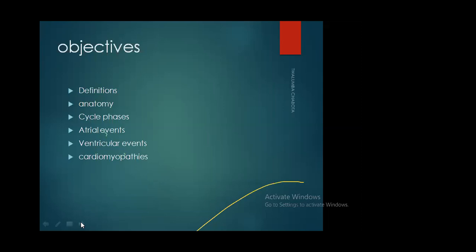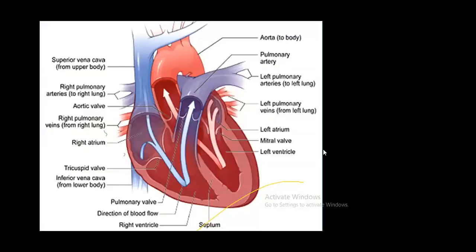In terms of definition, we can define the cardiac cycle as having one systole and one diastole. Systole entails contraction of the heart, and diastole means relaxation. Therefore, one complete cycle consists of one complete contraction and one complete relaxation. The heart has two functions: a diastolic function which allows ventricular filling, and a systolic function which maintains the stroke volume or cardiac output.